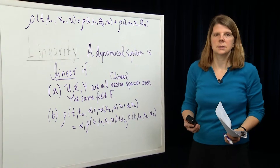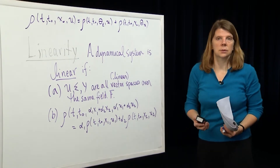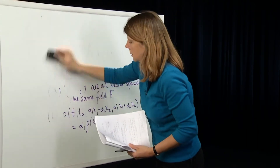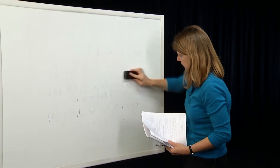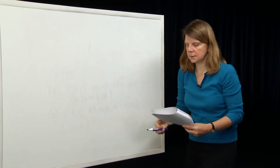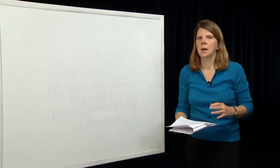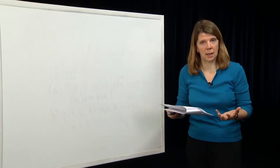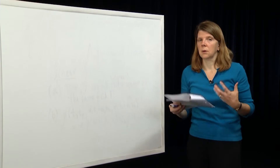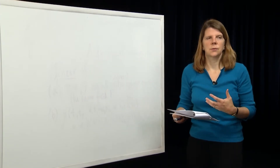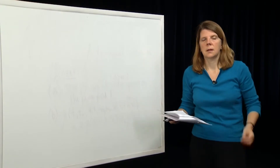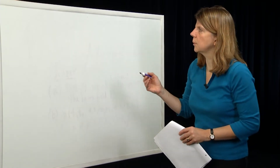The second important property we're going to talk about in this module is time invariance. Systems that are linear and time invariant are a special class for which we can do a lot of analysis and computation. Systems that are linear and time varying are also systems we can say a lot about, but there are fewer algorithms to compute solutions and analyze behavior compared to linear time invariant systems.